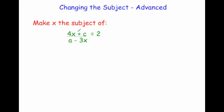Our last example: make x the subject of 4x plus c divided by a minus 3x equals 2. In a question like this, I've got x on the numerator and x on the denominator, so let's first get rid of the divide by a minus 3x by multiplying both sides by a minus 3x. That will give us something a lot easier to deal with.